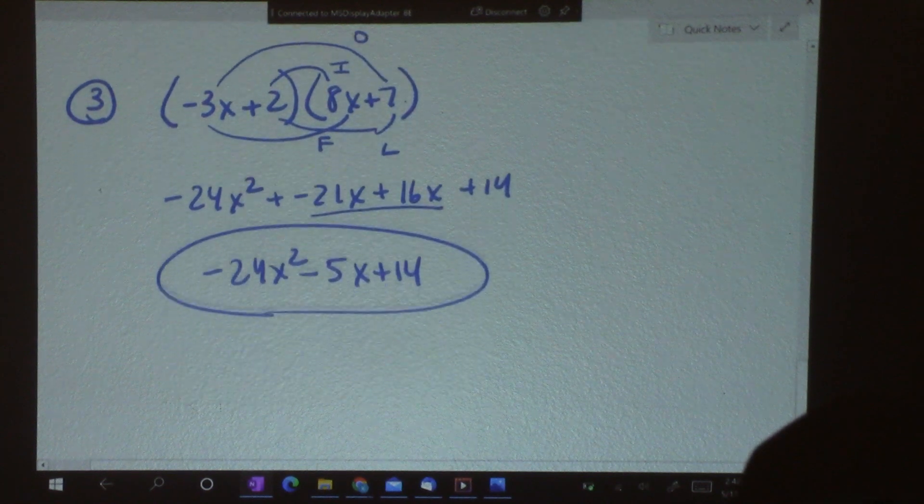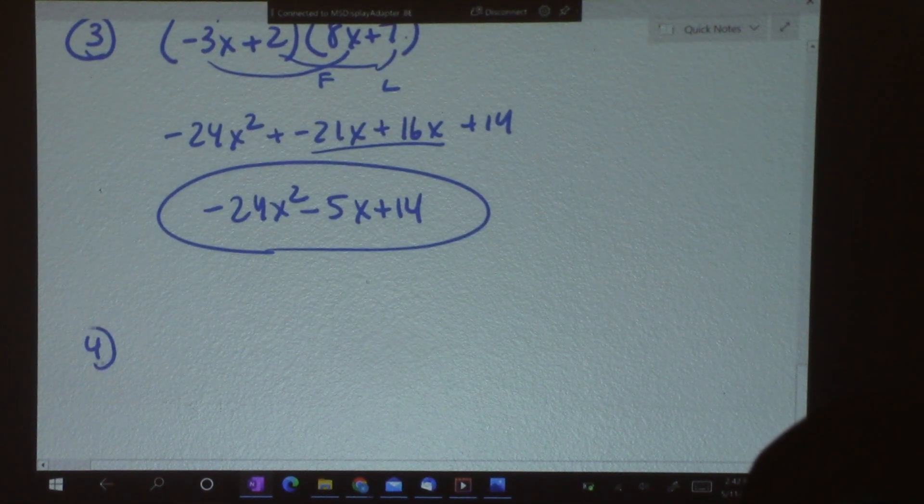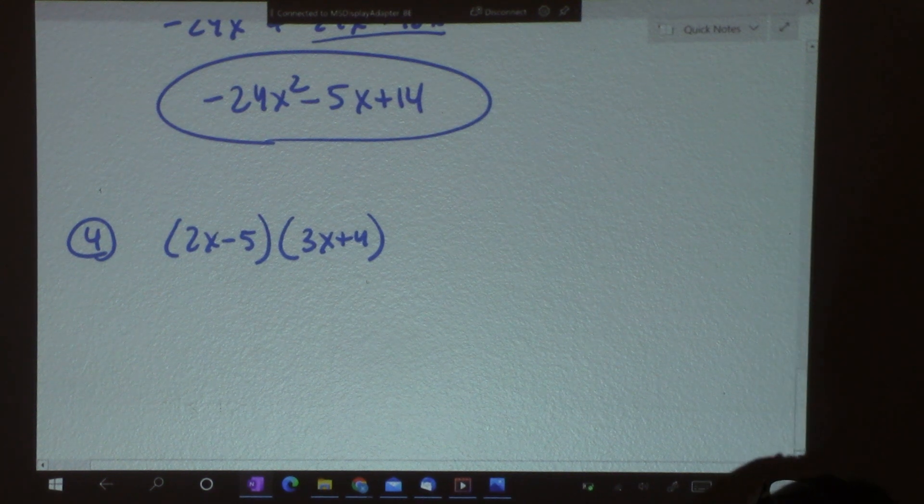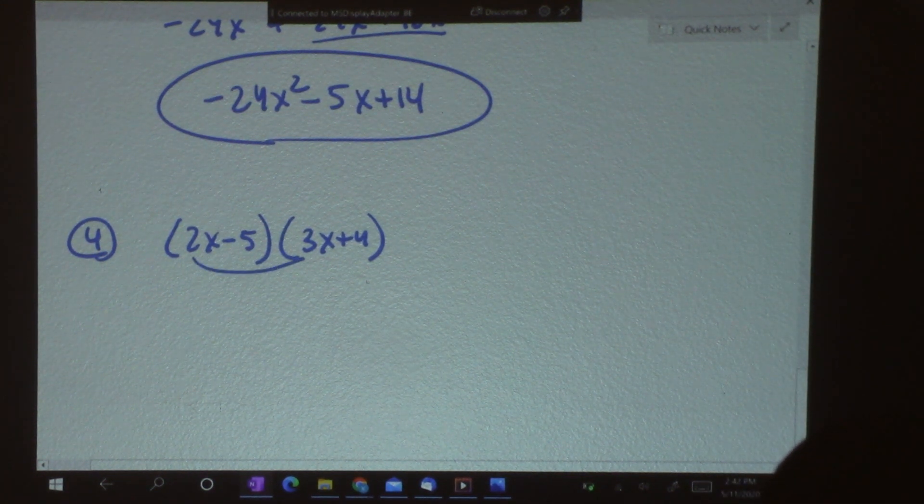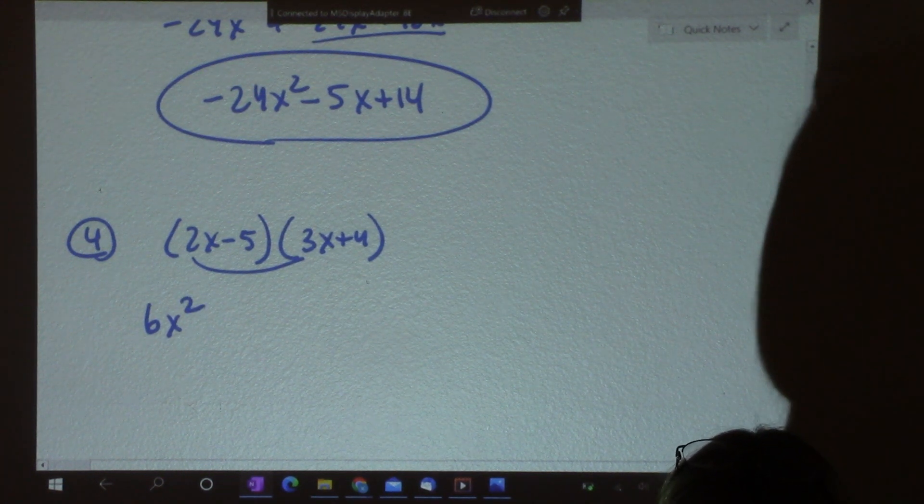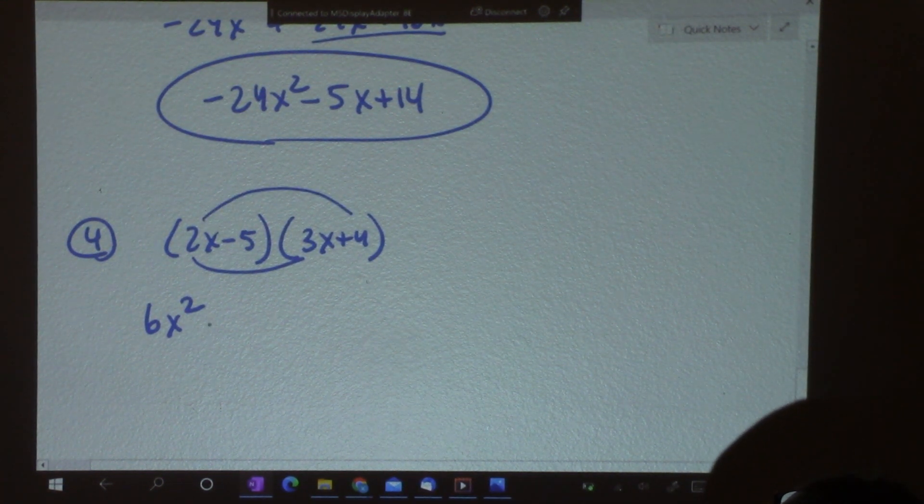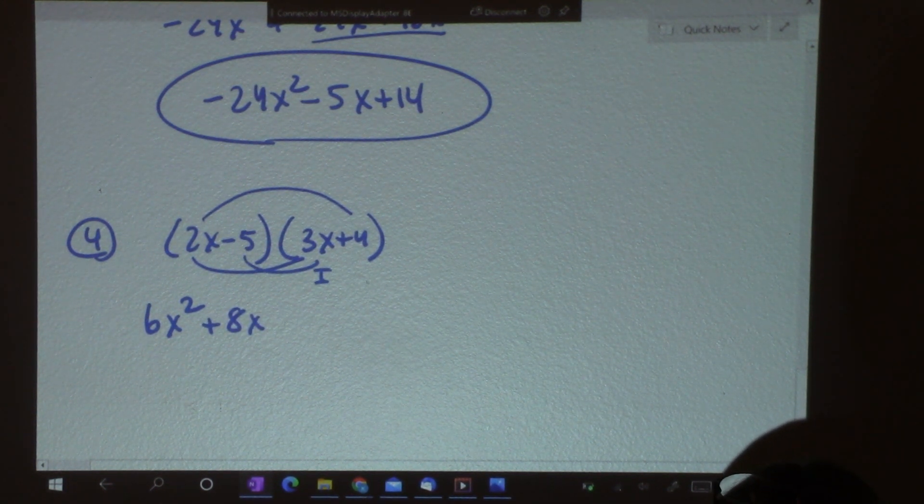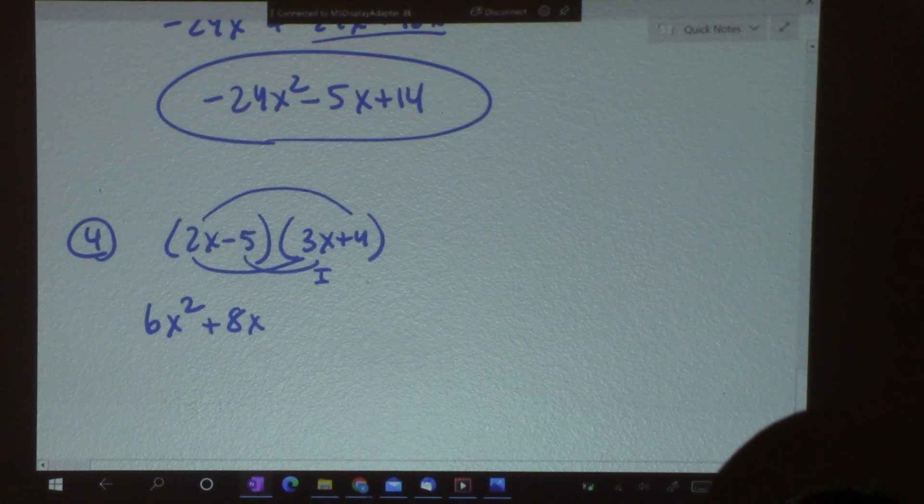Let's do one more of those. How about this one? 2x minus 5 times 3x plus 4. All the same thing. 2x times 3x is 6x squared. On the outside, I've got 8x. Inside, I've got negative 5. Be careful. Negative 5 times 3x is negative 15x.